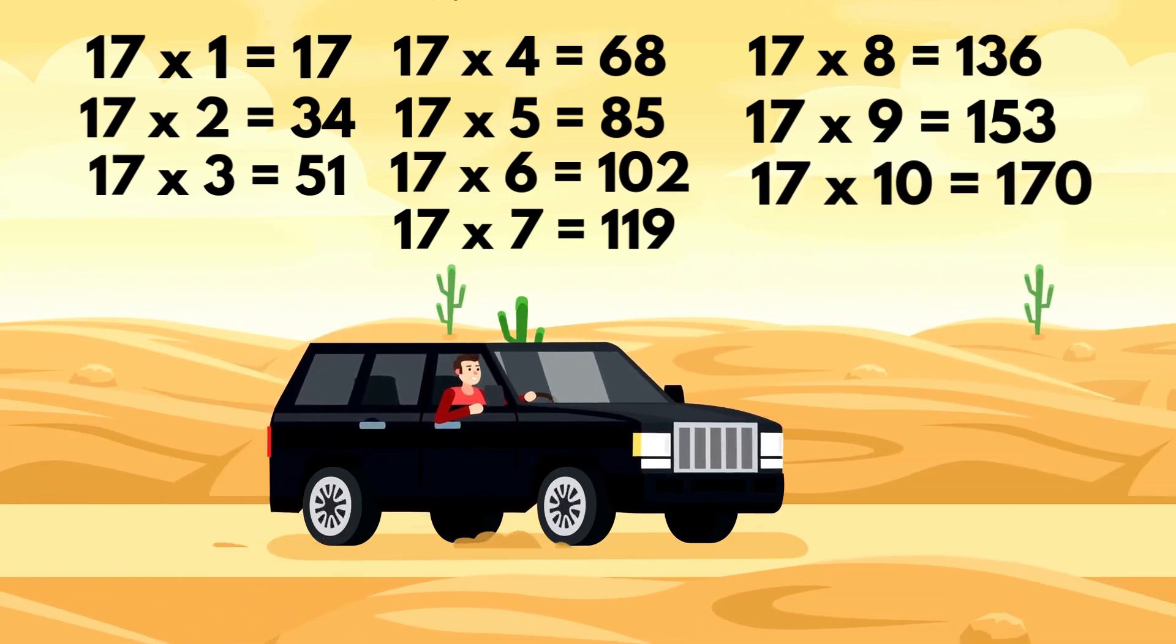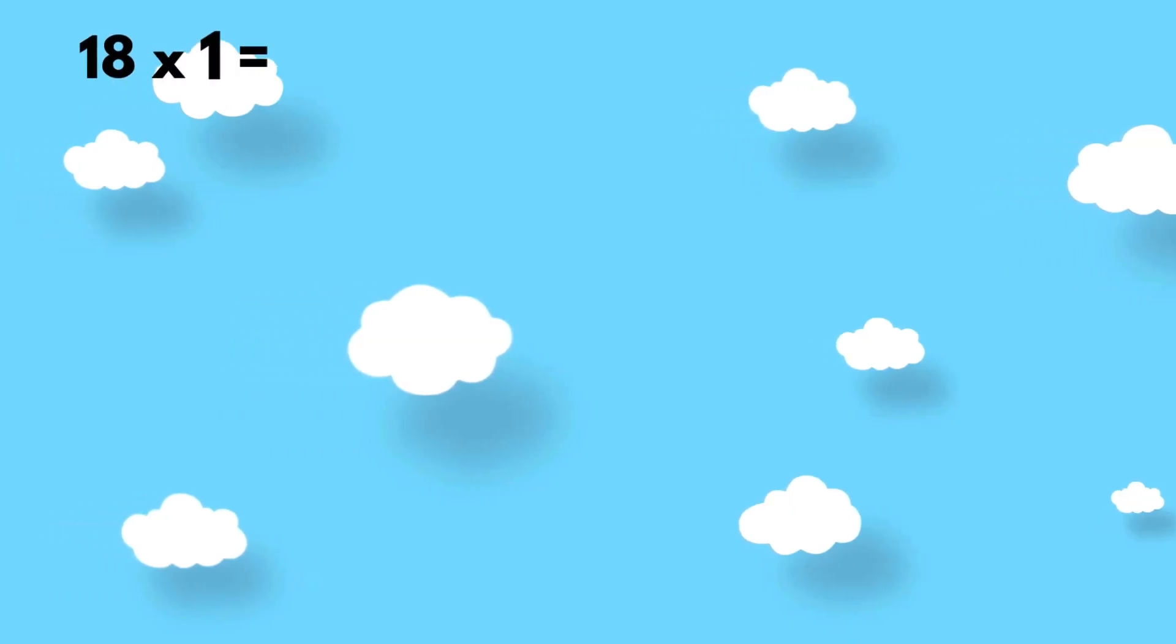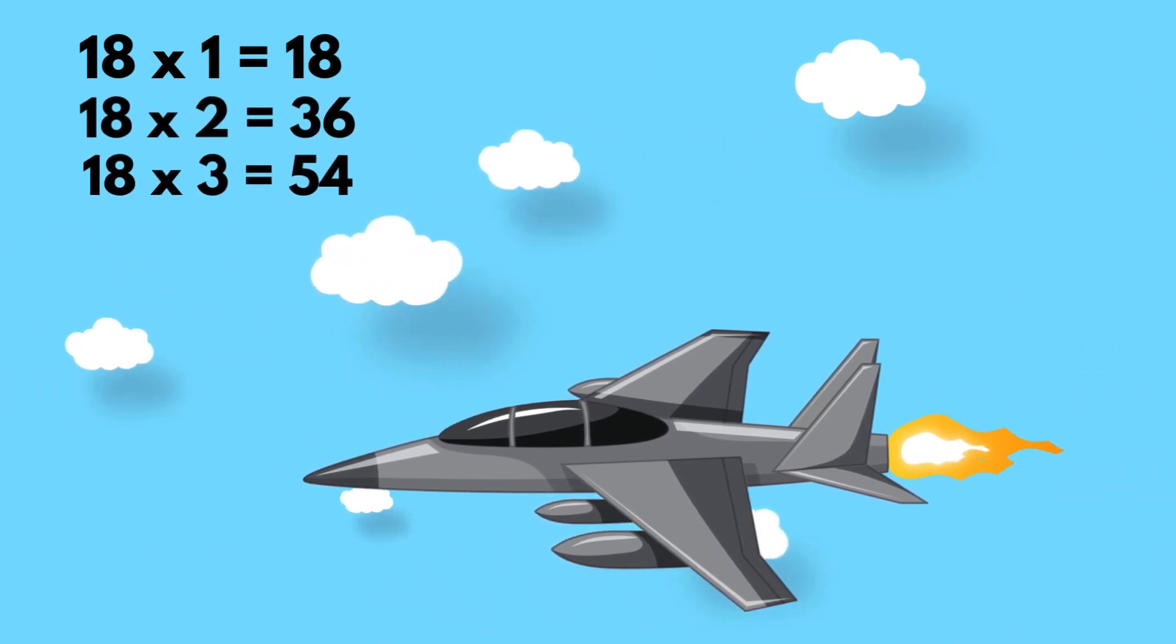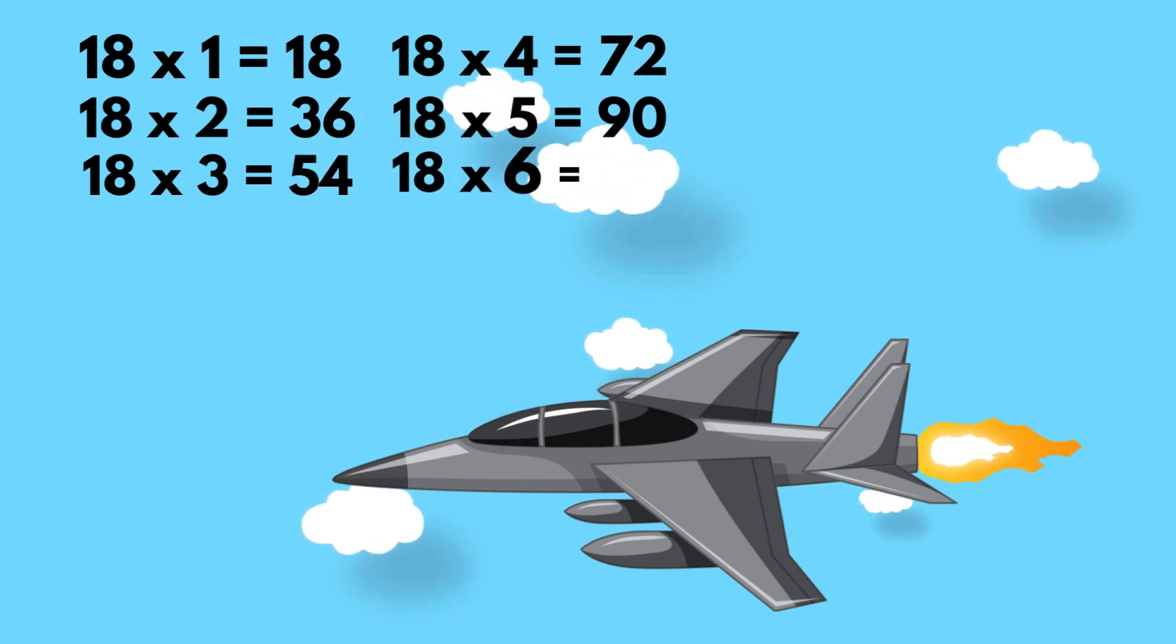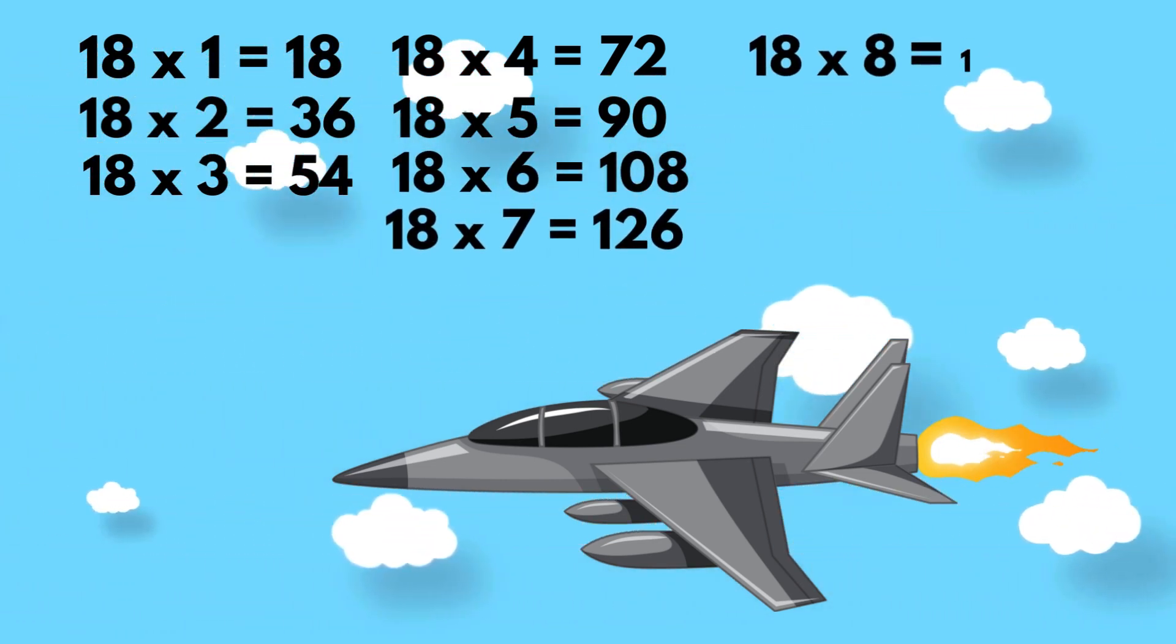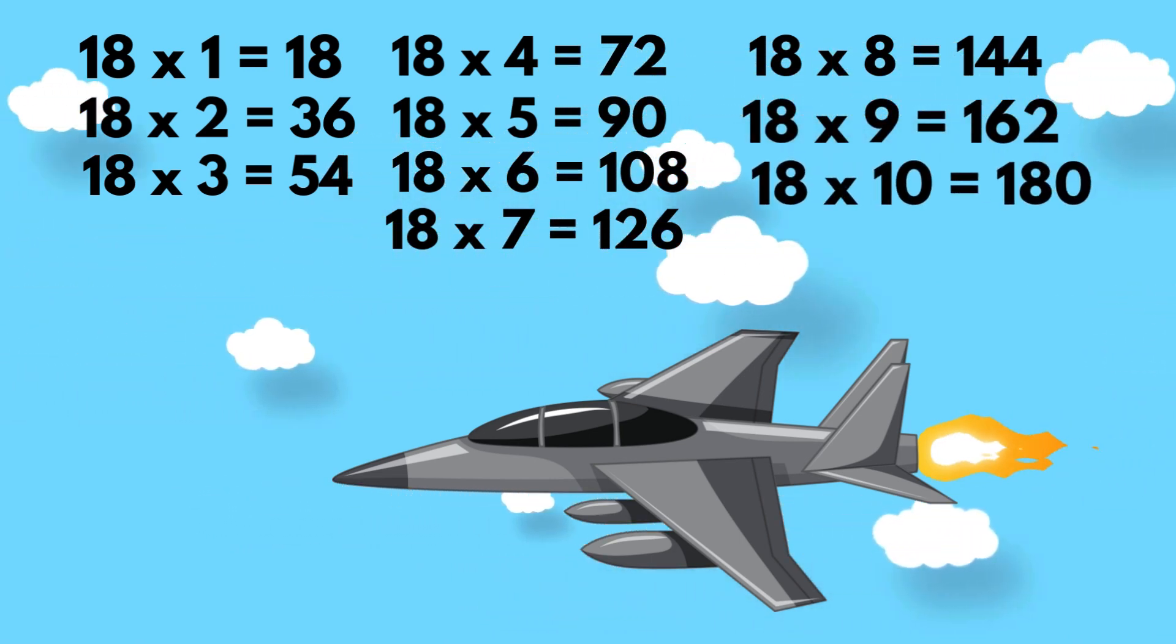Table of 18. 18 1's are 18, 18 2's are 36, 18 3's are 54, 18 4's are 72, 18 5's are 90, 18 6's are 108, 18 7's are 126, 18 8's are 144, 18 9's are 162, 18 10's are 180.